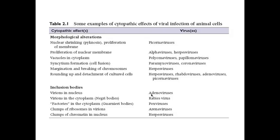Here is a list of other cytopathic effects known to occur when viruses infect animal cells. There are a variety of morphological alterations: nuclear shrinking, proliferation of the nuclear membrane, vacuoles, syncytium formation, and rounding up and detachment of cultured cells. On the right are the different viruses known to carry out each kind of CPE. Another kind of CPE is the formation of inclusion bodies — particulate structures within the cell, either in the nucleus or cytoplasm — which can represent virions or subviral assemblies. For example, Negri bodies are virions in the cytoplasm, very typical of cells infected with rabies virus. So if someone is suspected to have rabies and their cells contain Negri bodies, it's very likely that person has rabies.